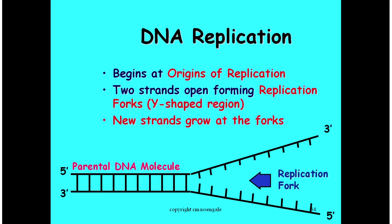DNA replication starts at points called origins of replication along the DNA molecule. Our two DNA strands open up to create a Y-shaped area called a replication fork, like a fork in the road. New strands of DNA are built based on each of the parent strands. Label the replication fork and the 5' and 3' ends of each strand.